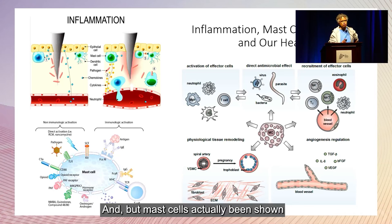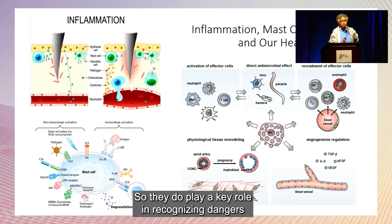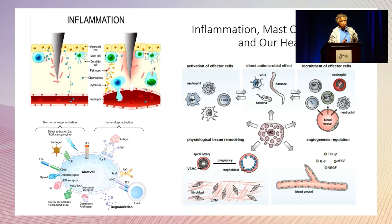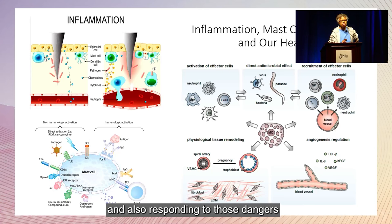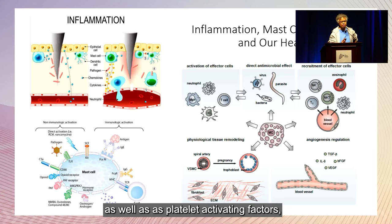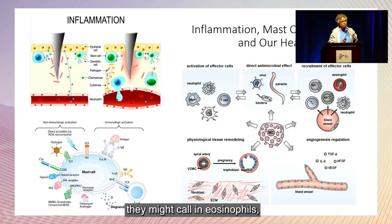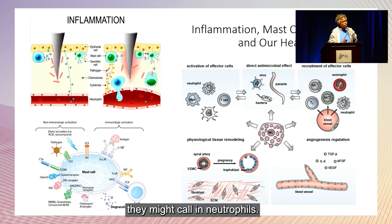Mast cells have actually been shown to be found in frogs, and frogs really aren't worried about peanut allergies, so they do play a key role in recognizing dangers and responding with very potent chemicals. They are able to call in help by altering blood flow — mast cells have the ability to release histamine as well as platelet-activating factors. They can call in the SWAT team: eosinophils if they're seeing parasites, or neutrophils if they're seeing bacteria. Mast cells are like master regulators.